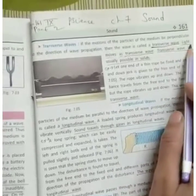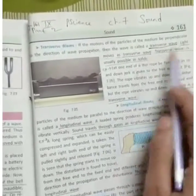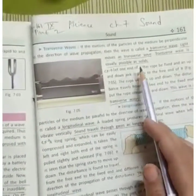Transverse wave. Light, my example, is transverse wave. I mean, light moves as transverse waves. Transverse wave is usually possible in solid.